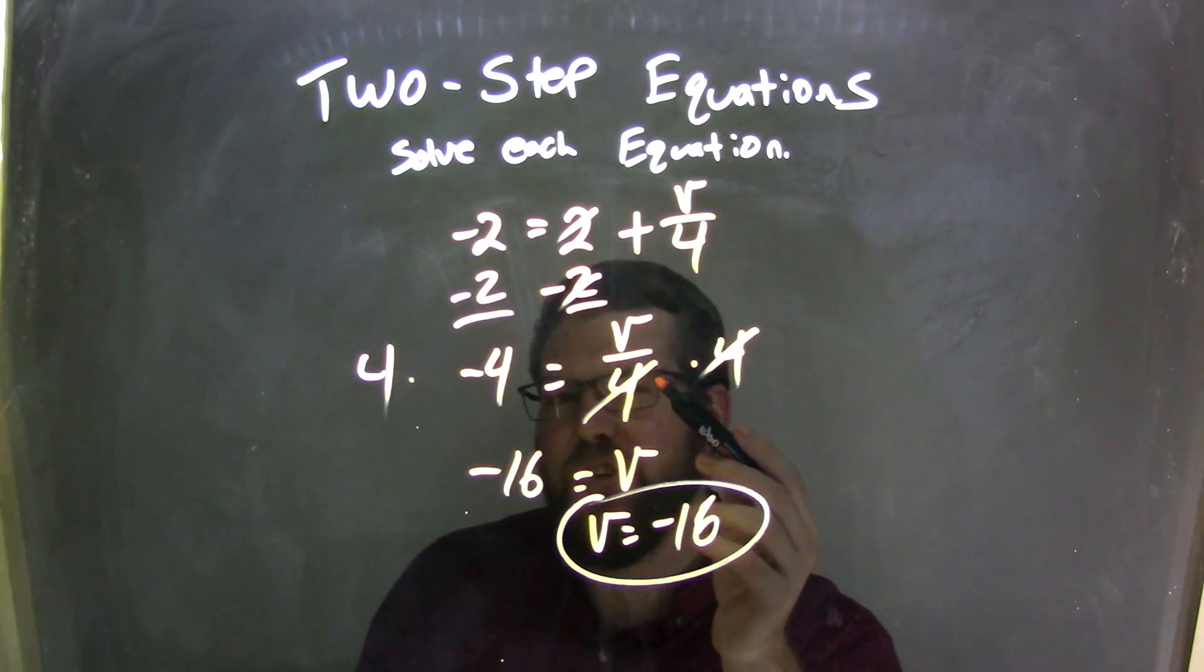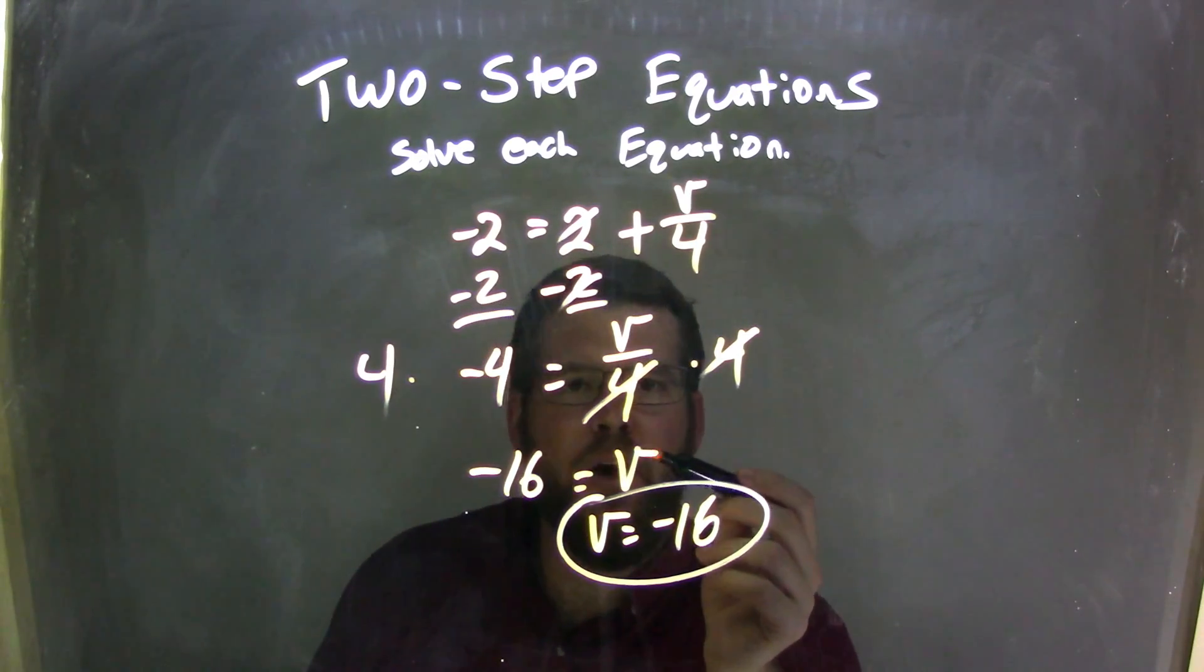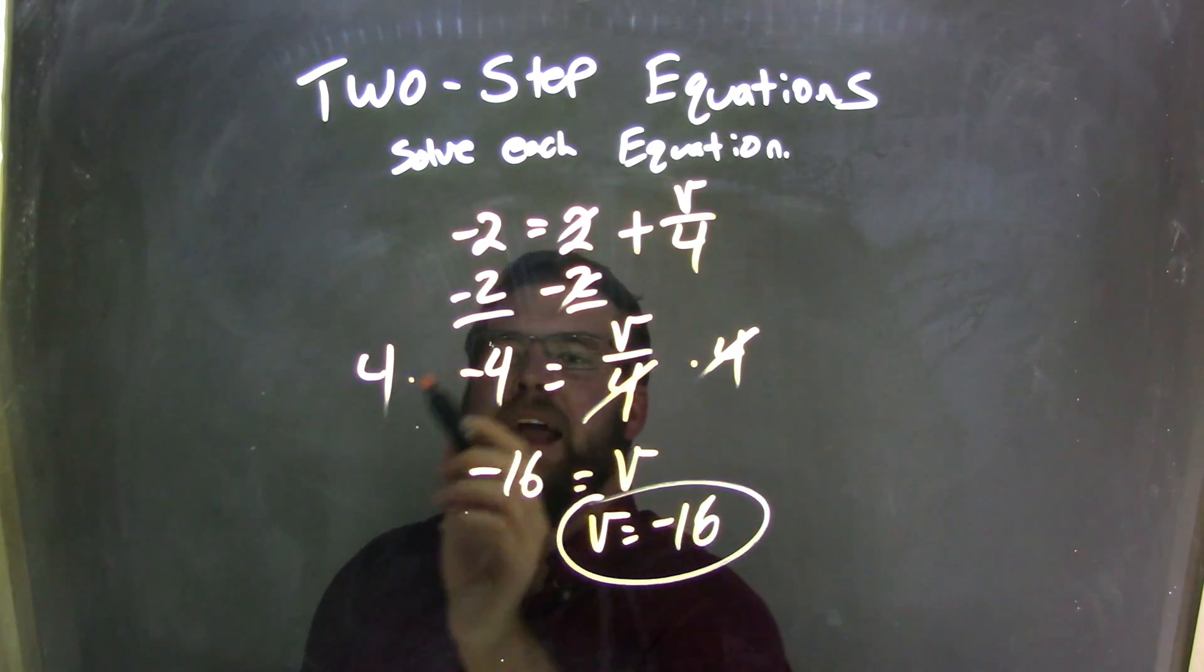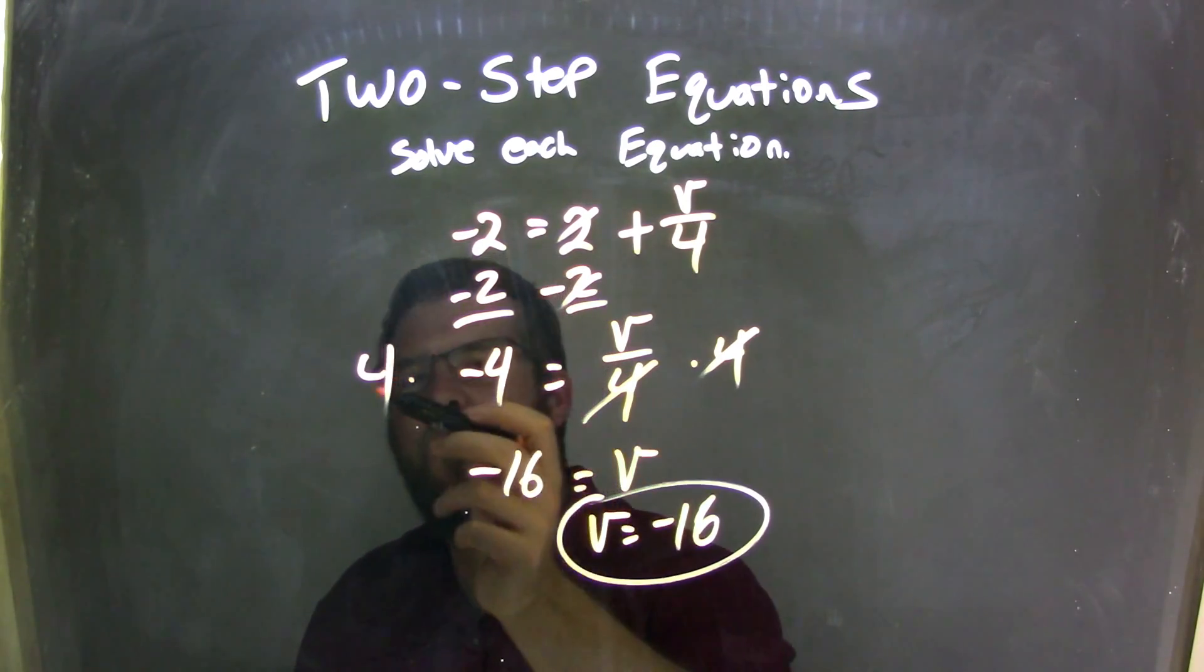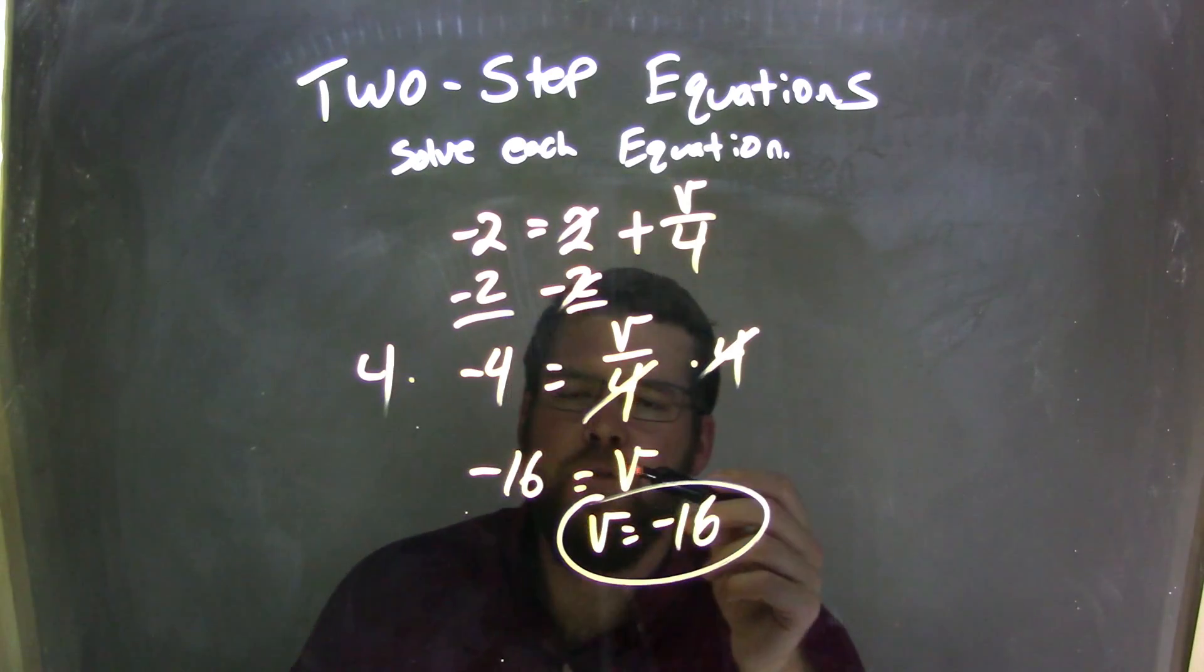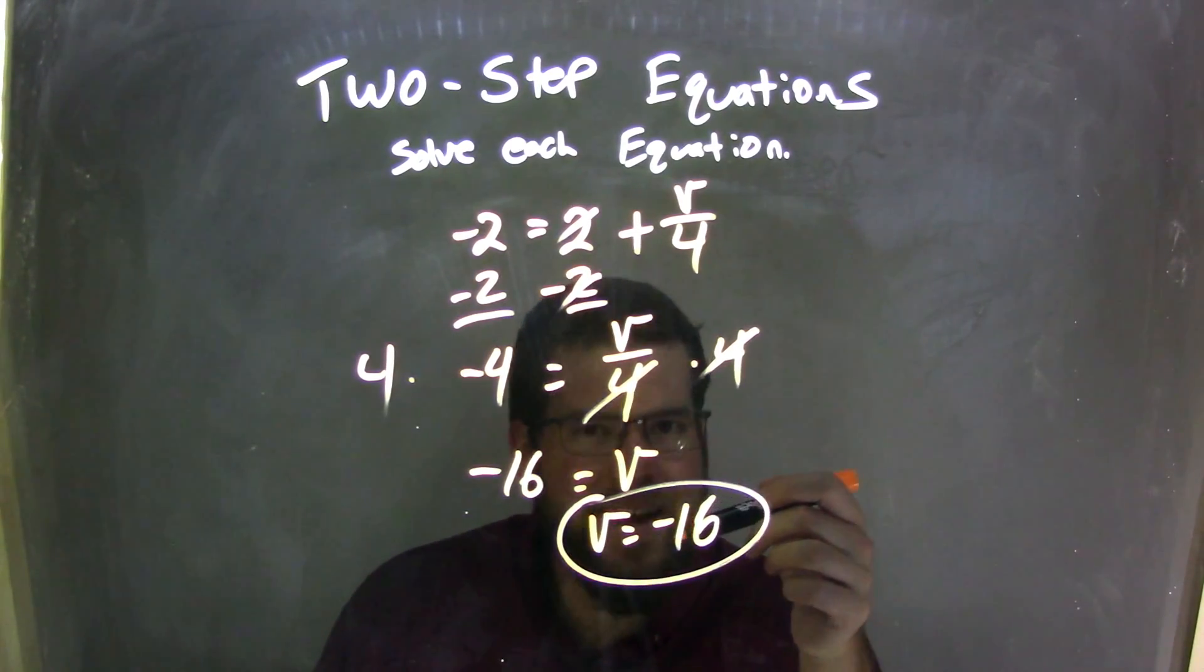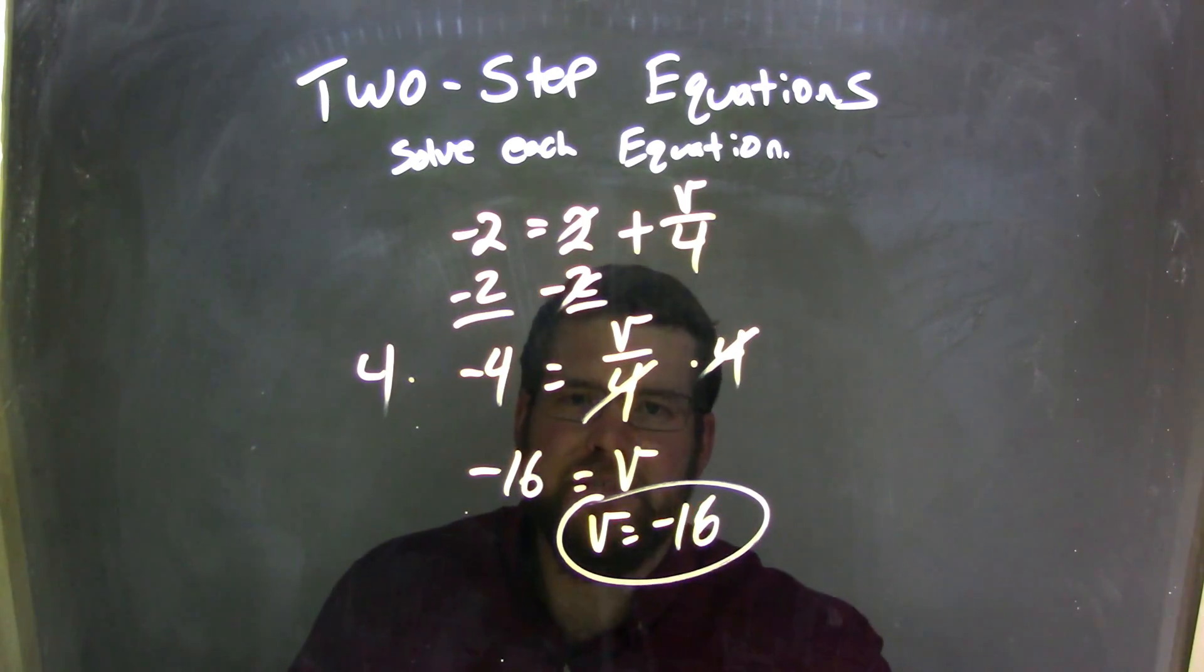Opposite of that division is multiplication. So I multiplied a 4 to both sides, leaving a v by itself. The 4 is here cancelling, and I have 4 times negative 4, and a positive times the negative is a negative, and so 4 times negative 4 is a negative 16. So a negative 16 equals v. I rewrote this to look nicer at v first, and so my final answer is v equals a negative 16.